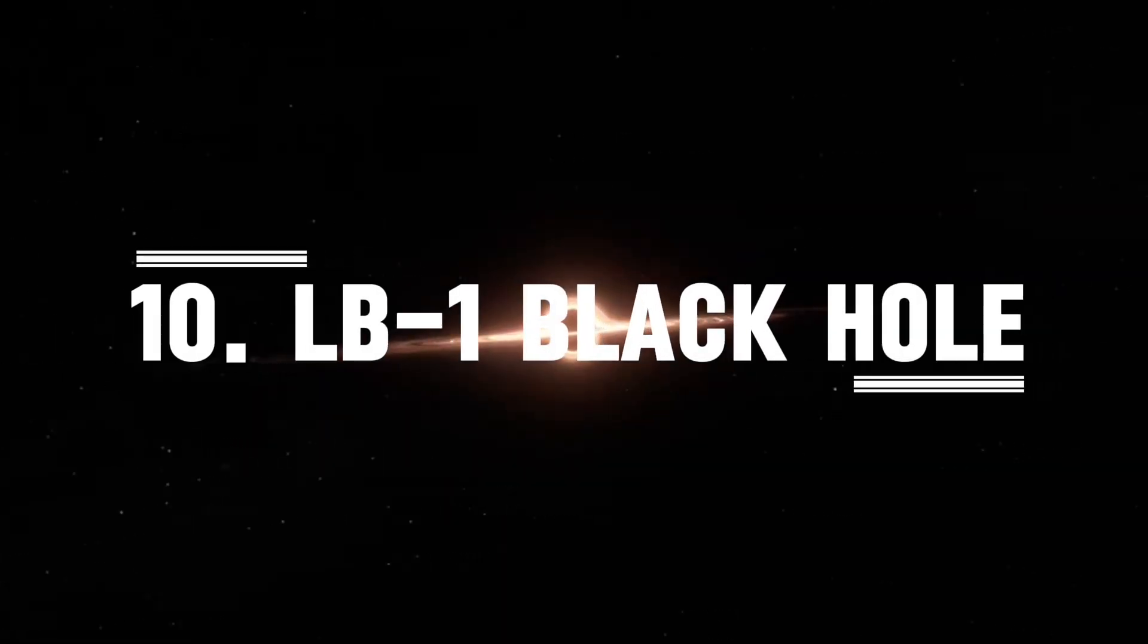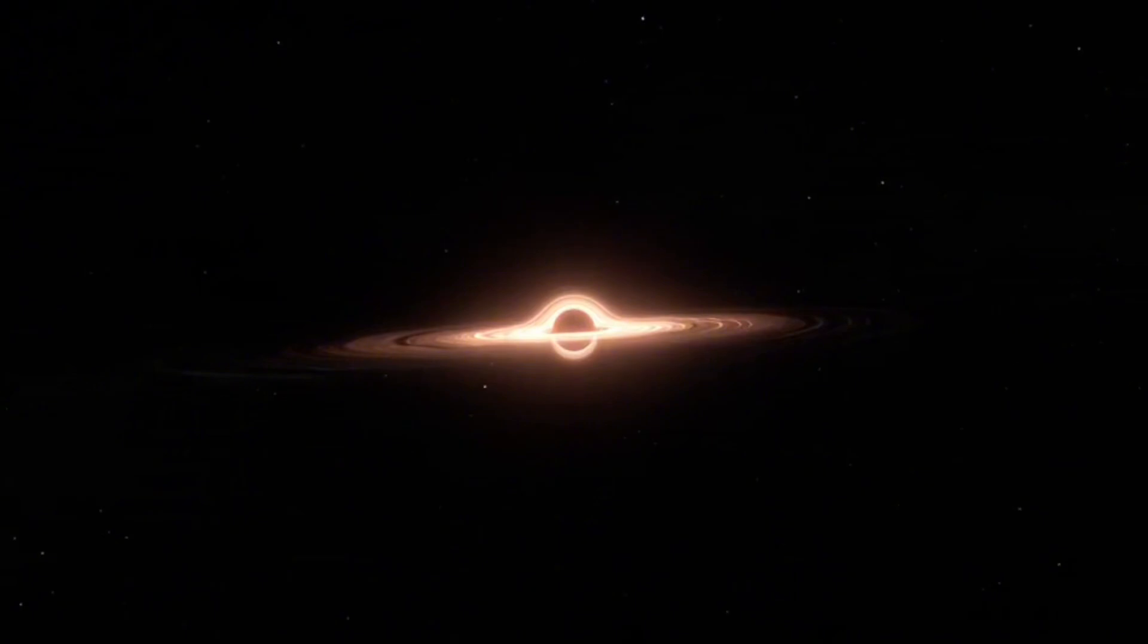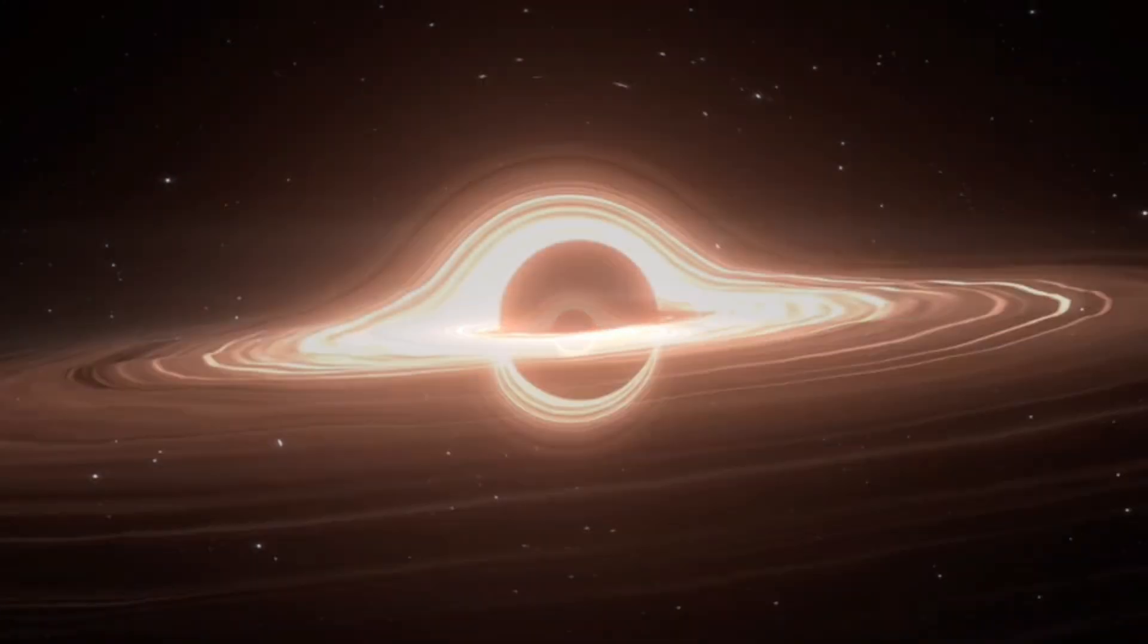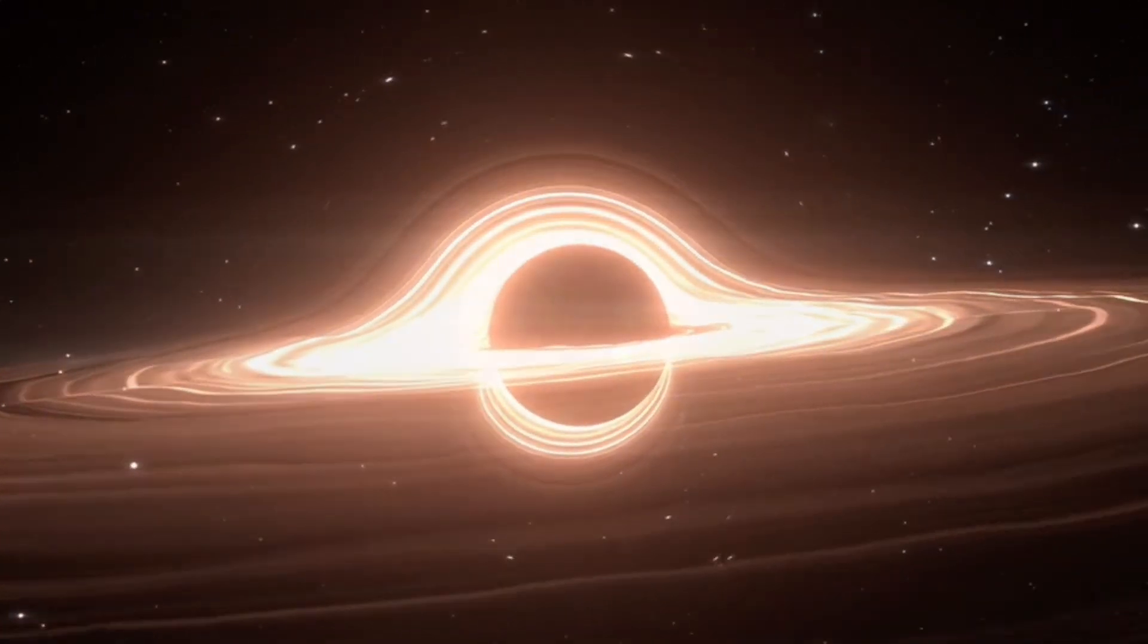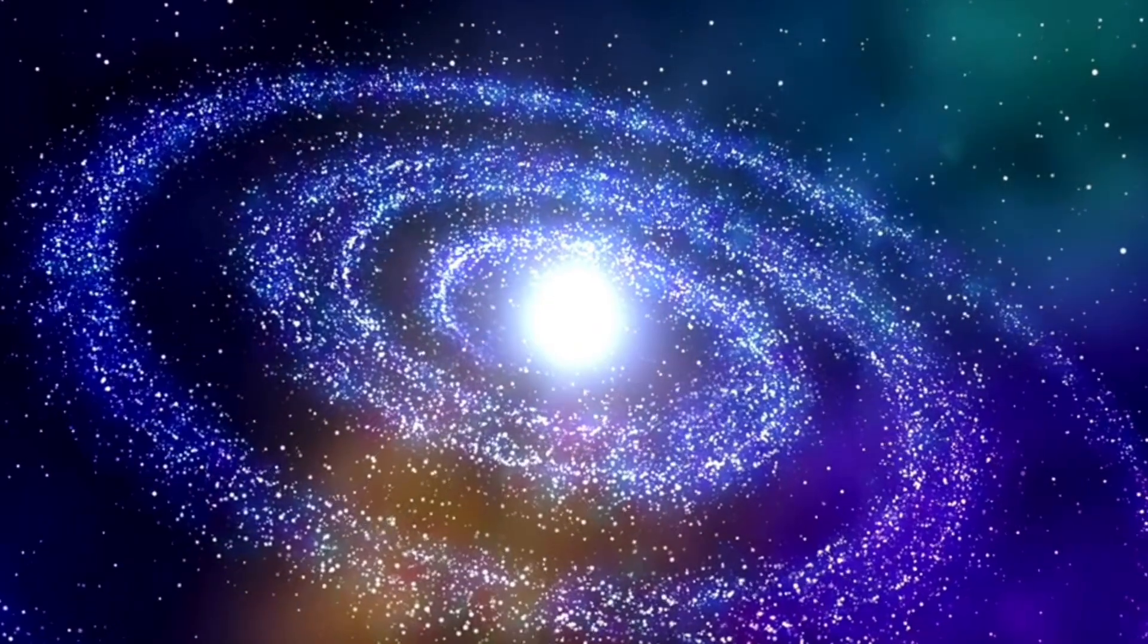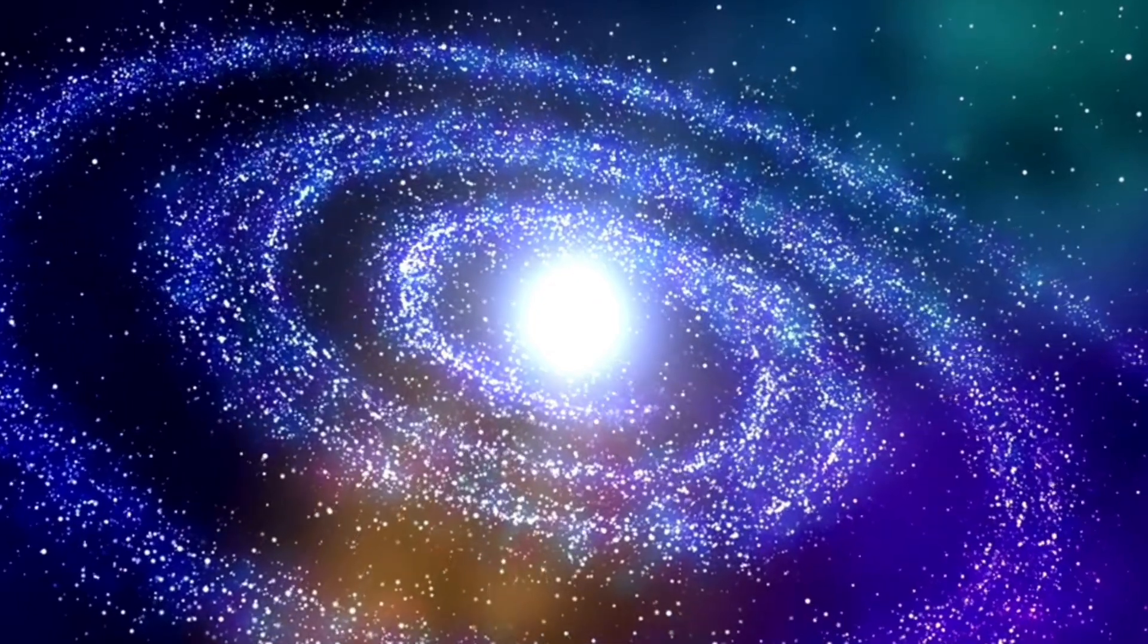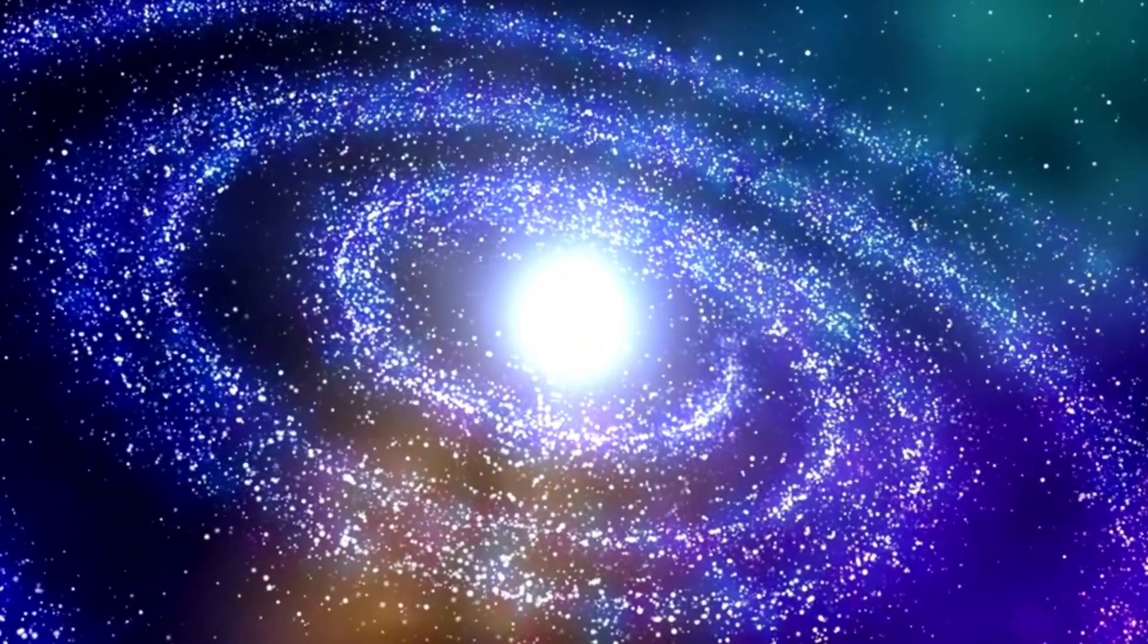The black hole that shouldn't exist, LB-1. In 2019, scientists announced a shocking discovery. A black hole in our galaxy that should be impossible. Called LB-1. This black hole is about 70 times more massive than the sun. Now normally, when a star dies and becomes a black hole, the size is limited. Especially in galaxies like ours that have a lot of heavy elements, black holes tend to top out around 20-30 solar masses. But LB-1 was more than double that and no one could explain how it formed.